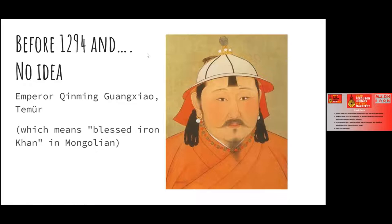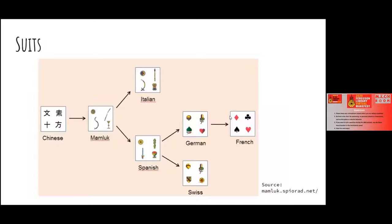The suits of the cards show a lot of similarities as they move through cultures. The next step after the Chinese is called the Mamluks — folks who were originally slaves brought up to be warriors in ancient Egypt, and who ended up taking over because they were so powerful and well-trained, right around the time of the Crusades.